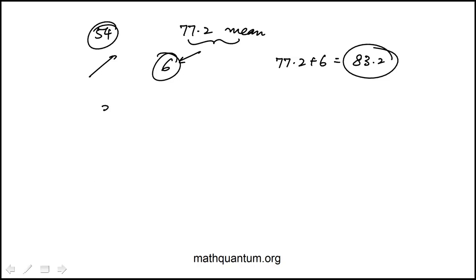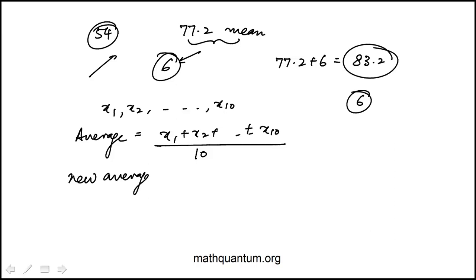Let's do an example. Let's say if our data set is x1 through x10, then the average is x1 plus x2 all the way to x10 divided by 10. Now I'm going to add, say, six to each one. My new average will be x1 plus 6, x2 plus 6, all the way to x10 plus 6.